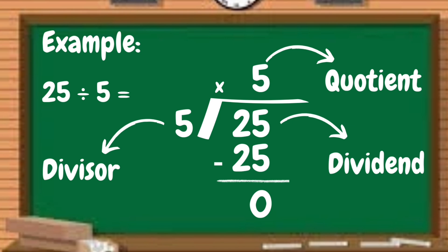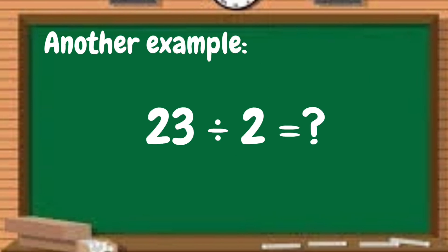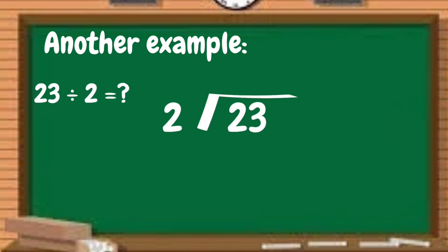Let's have another example. 23 divided by 2. In this problem, our dividend is 23 while our divisor is 2. So we can divide 2 divided by 2 is 1. We have to multiply it. 1 times 2 is 2. Then we have to subtract. 2 minus 2 is 0.